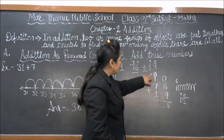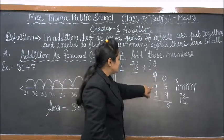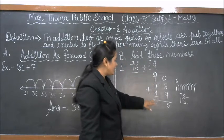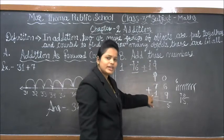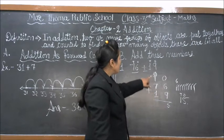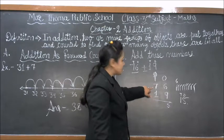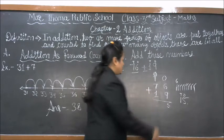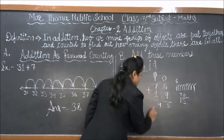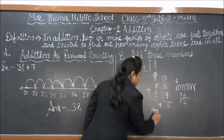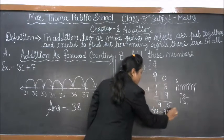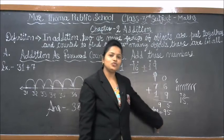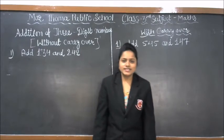Then we count 1 plus 7 equal to 8, and 8 plus the carry-over 1 equal to 9. So we get the answer 95.